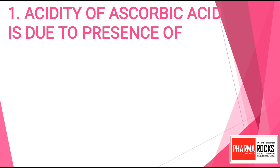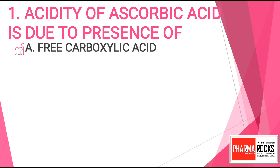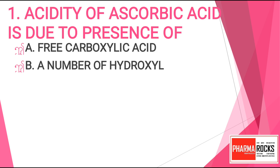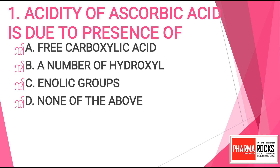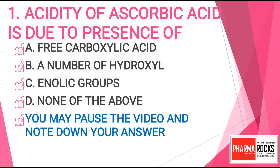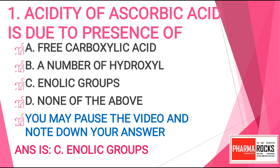Question 1: Acidity of ascorbic acid is due to the presence of — Option A: free carboxylic acid, Option B: a number of hydroxyl groups, Option C: enolic groups, or Option D: none of the above. You may pause the video and note down your answer. The correct answer for this question is Option C, enolic groups.